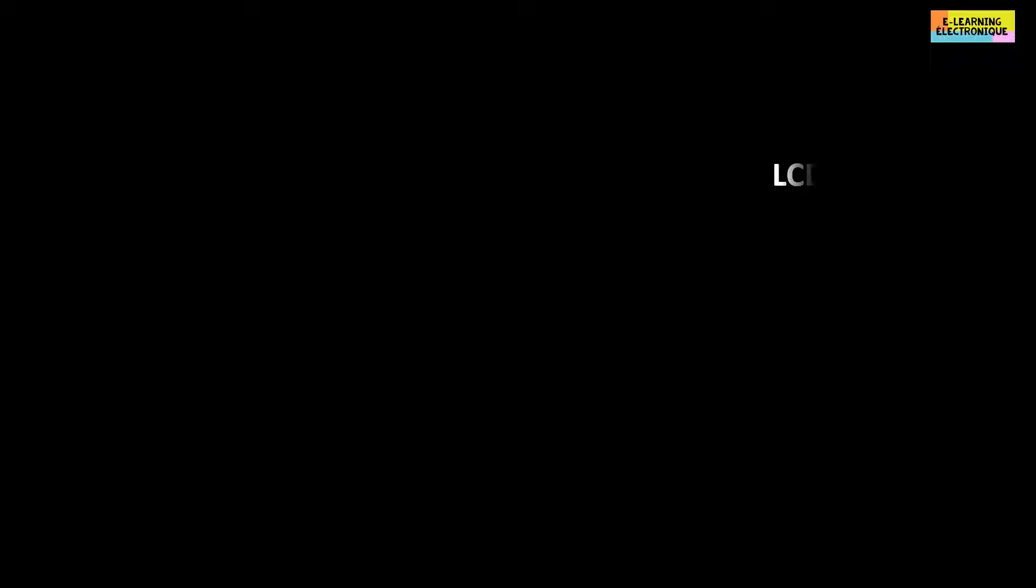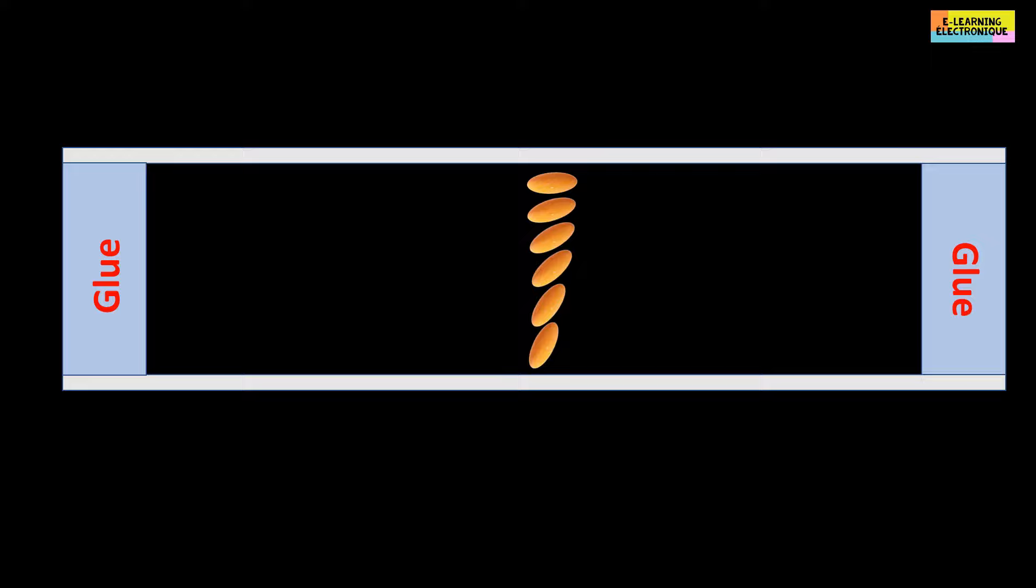They have disordered positions but their orientations are ordered. In the LCD screens called under the abbreviation TN, it is a liquid crystal of nematic type in the shape of helix which is used. TN is the English acronym of twisted nematic. TN LCD screens are the simplest to manufacture and have a low manufacturing cost.